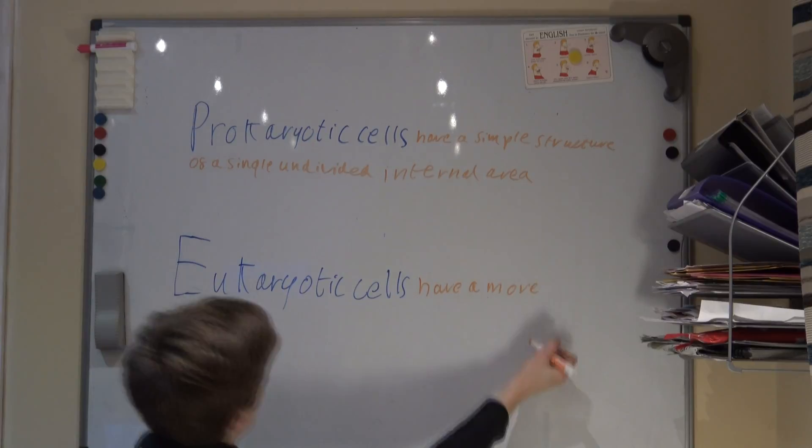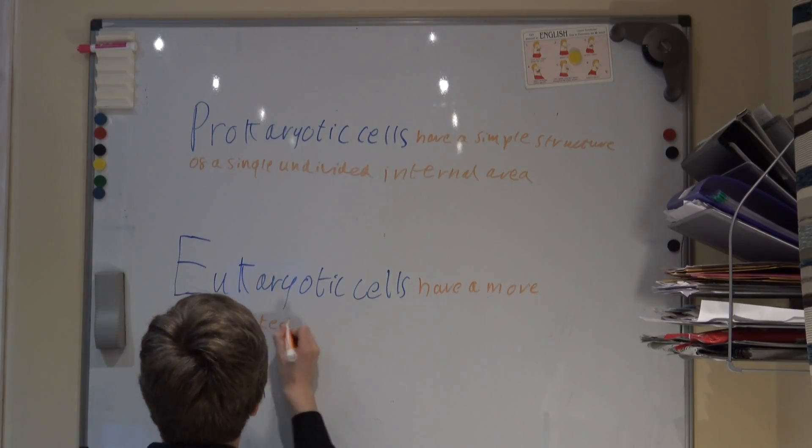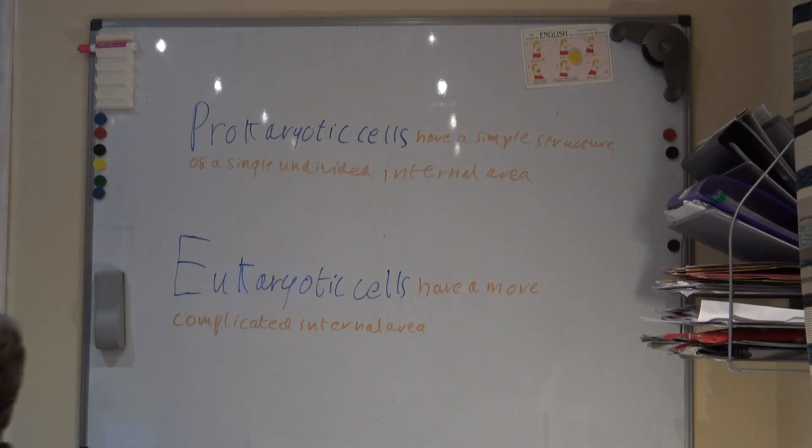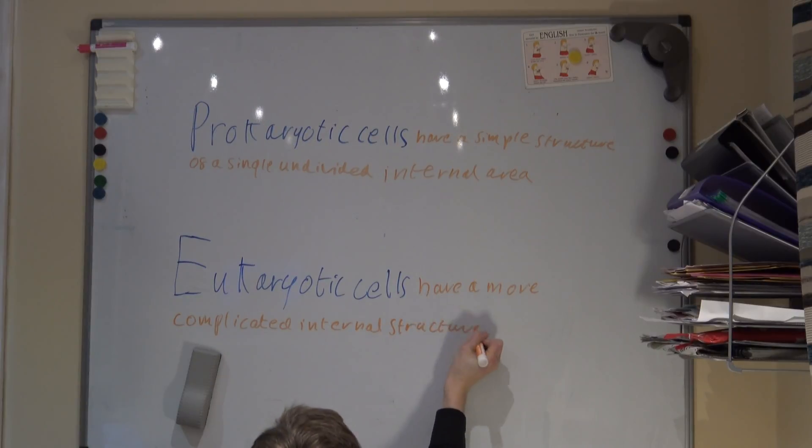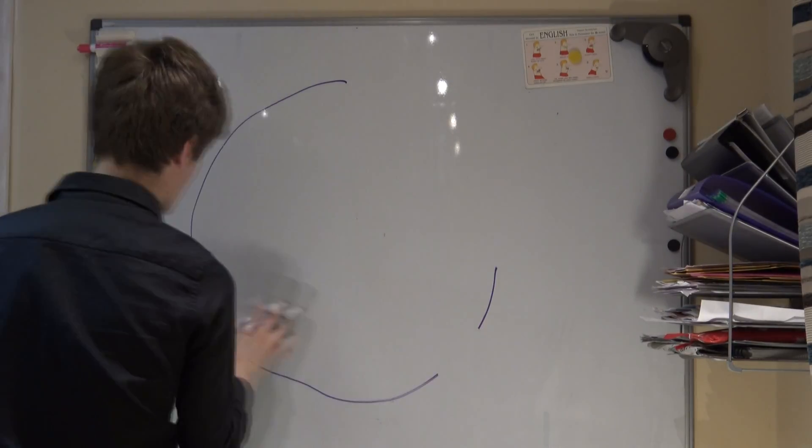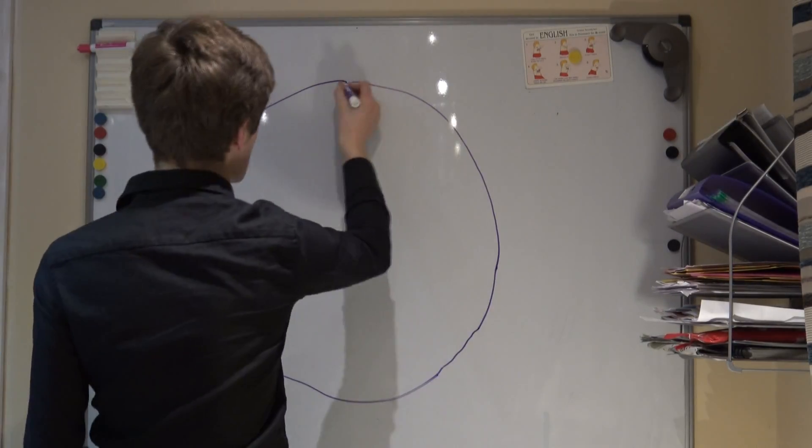Eukaryotic cells have a more complicated internal structure containing a membrane bound nucleus and cytoplasm which contains many membrane bound cellular components. It is in this cytoplasm that chemical reactions take place. In eukaryotic cells the cytoplasm is divided into membrane bound compartments called organelles. There are a number of organelles that are common to all eukaryotic cells.